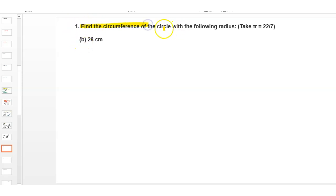Today's question is: find the circumference of the circle with the following radius. Take π = 22/7 where radius is 28 cm.